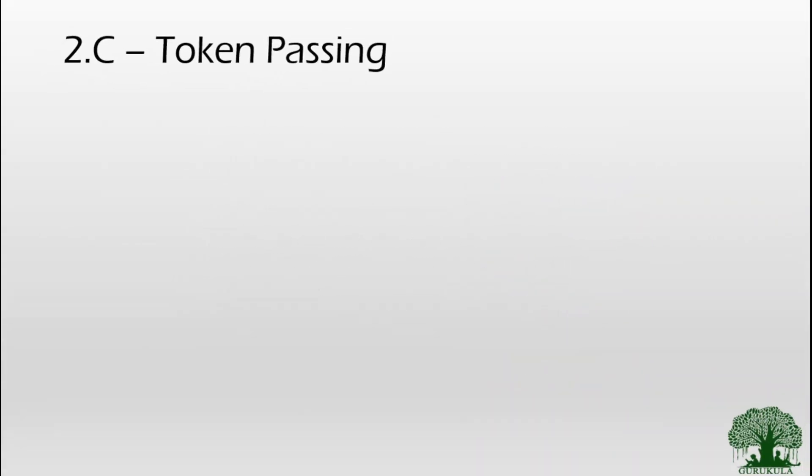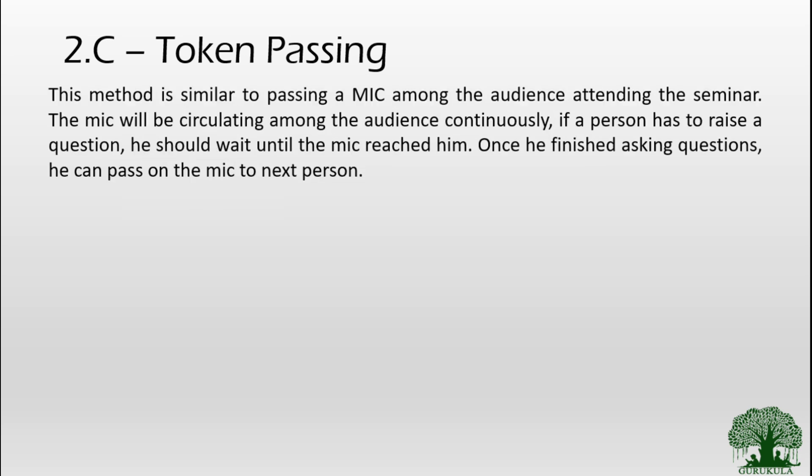The last method of access control is token passing. Token passing is similar to passing a microphone among the audience at a seminar. The mic circulates among the audience continuously, and if a person wants to raise a question they must wait until the mic reaches them. Once they finish asking their question, they pass the mic to the next person. The mic keeps rotating among the audience, and any participant can raise a question only when the mic comes to them. The same way, the token passing mechanism applies on a network as well.